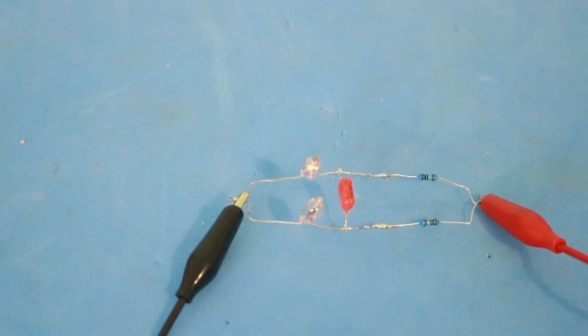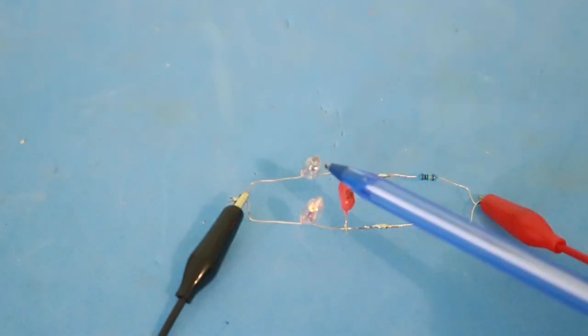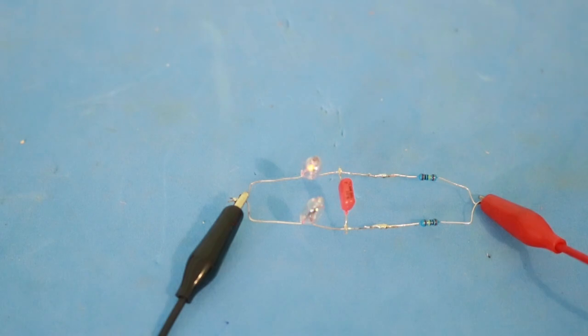This circuit needs a very precise voltage in order to work. One or two volts above or below the correct voltage and the effect will not appear. Now only one of the lamps will be on.